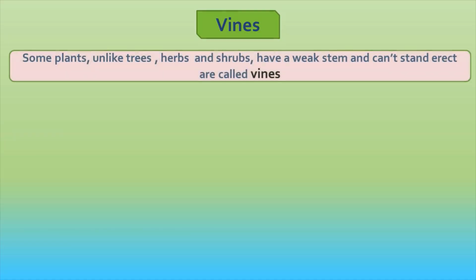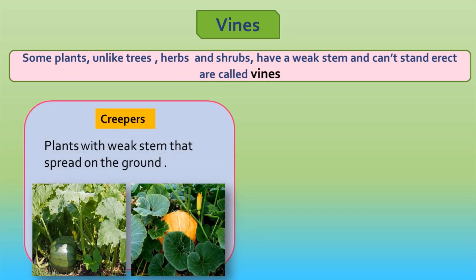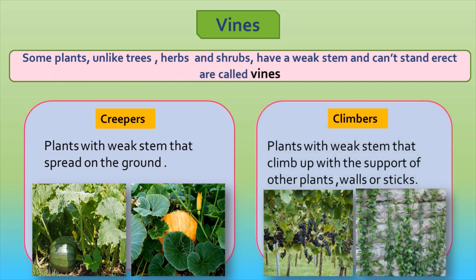Vines: some plants, unlike trees, shrubs, and herbs, have a weak stem and can't stand erect — these are called vines. Some vines with a weak stem that spread on the ground are called creepers. For example, watermelon plant, pumpkin plant, etc. Some vines that climb up with the support of other plants, walls, or sticks are called climbers. For example, grape vines, money plant, etc.